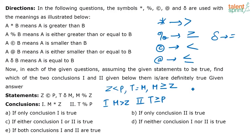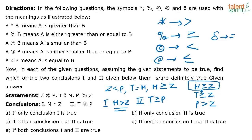Let's look at the given statements. Z is less than P. M is greater than or equal to Z. T is equal to M, so I can say T is also greater than or equal to Z. And P is greater than Z. Now the first conclusion says M is greater than Z. But from the given statements you can only say M is greater than or equal to Z — you cannot surely say M is greater than Z, it can be equal also. So this conclusion does not follow.